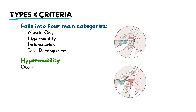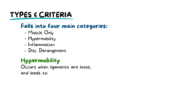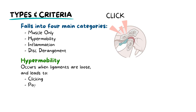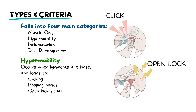TMJ hypermobility occurs when the ligaments are loose and the condyle can move beyond the articular eminence. This leads to clicking, popping noises, and open lock situations.